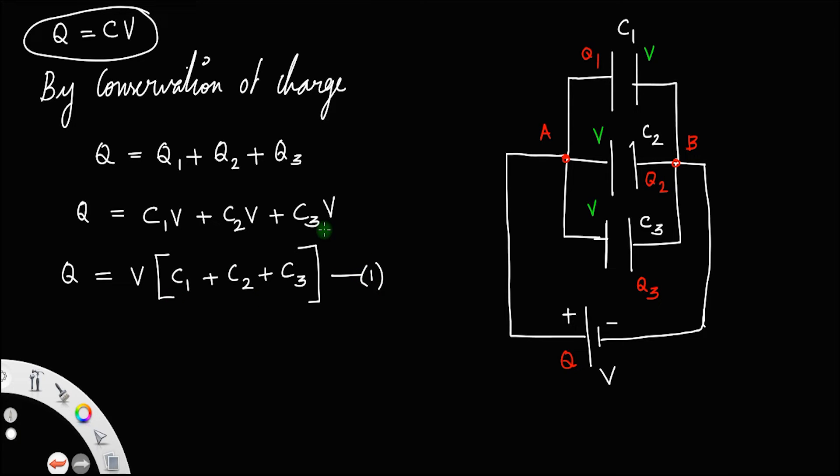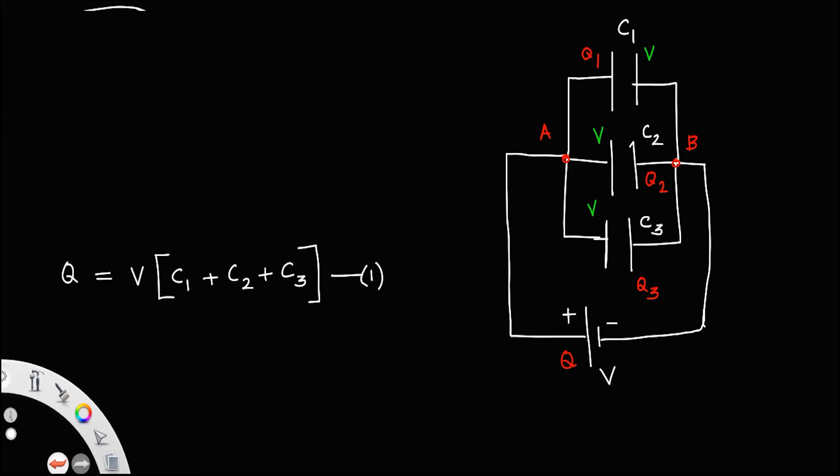Now, let me erase this. Suppose, if I replace all these capacitors with a single capacitor, let us say Cp of capacitance Cp and I just plug in that capacitor in between the points A and B itself and connected that across the same cell of potential V.